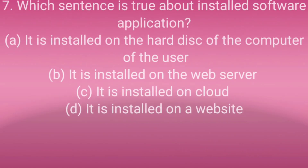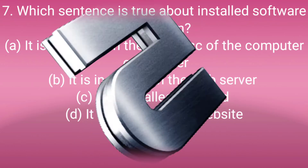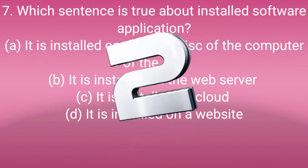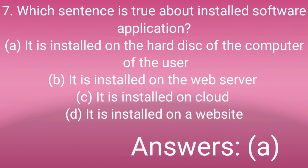Question number seven: Which sentence is true about installed software applications? Option A: It is installed on the hard disk of the user's computer, Option B: It is installed on a web server, Option C: It is installed on cloud, Option D: It is installed on a website. Answer is A — it is installed on the hard disk of the user's computer.